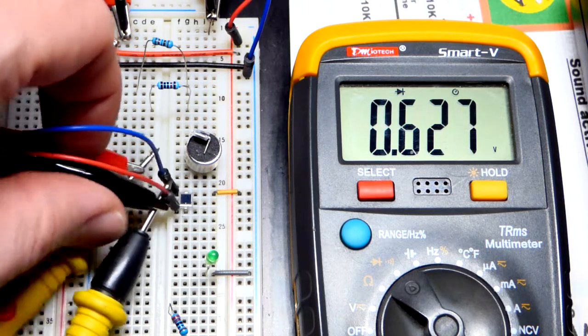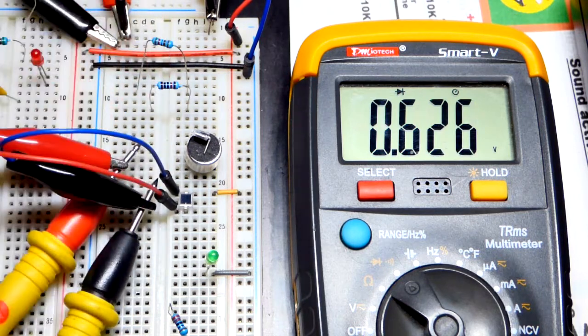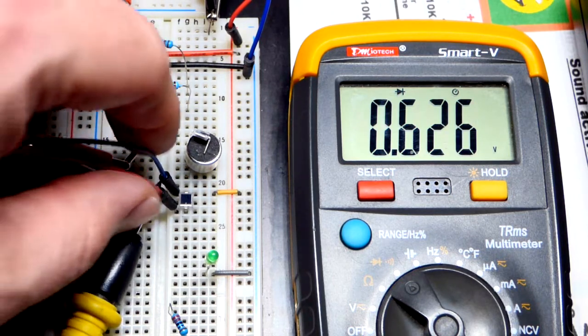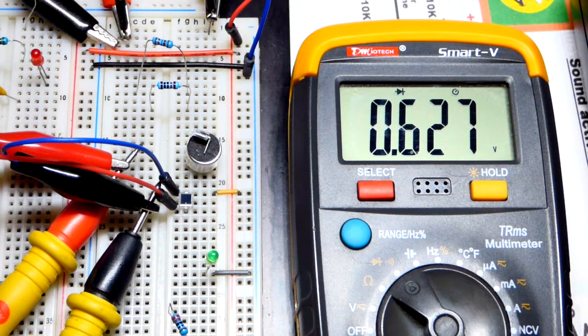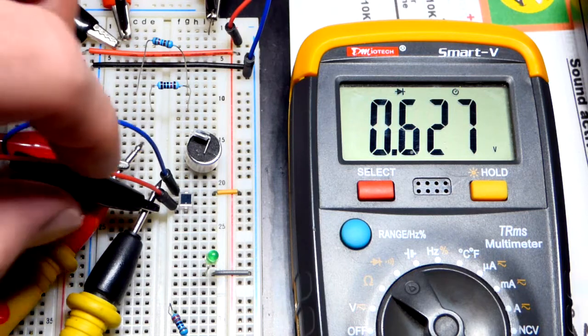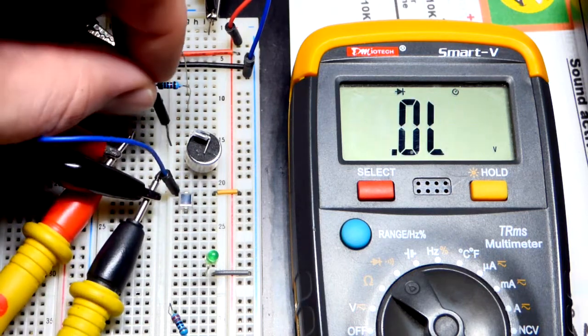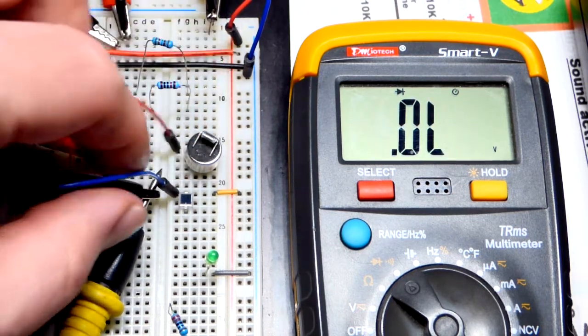So there we go. The alligator clips are clipped to the probes by the way. And then they bring the jumper wires over to measure the component. There you can see we have a diode drop right there.